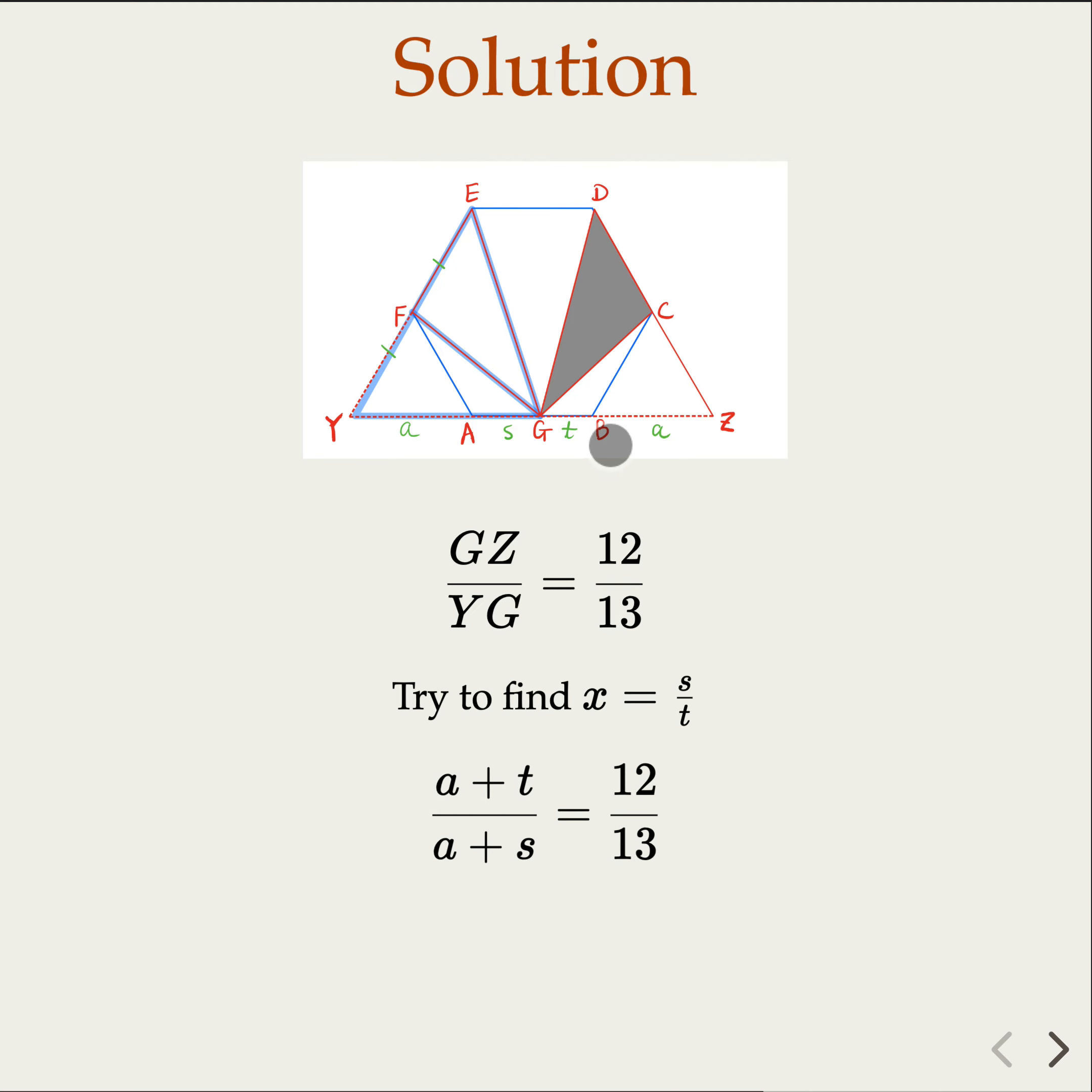So this is the base A plus T over A plus S is 12 over 13. What is A? A is S plus T. So replace that with S plus T. This becomes S plus 2T. And this becomes 2S plus T. S plus 2T over this equals 12 over 13.